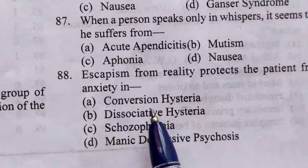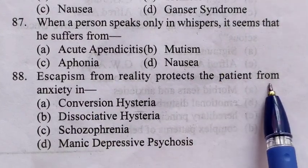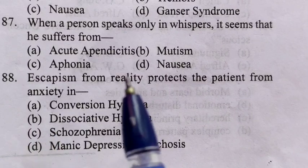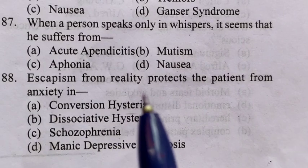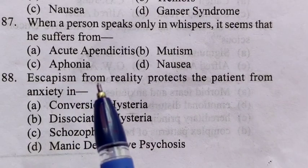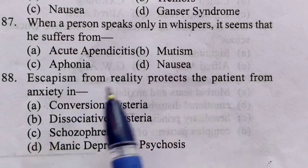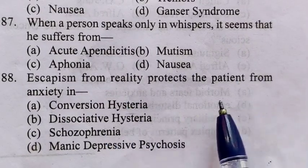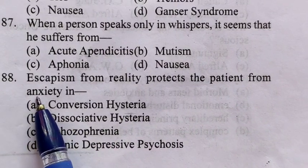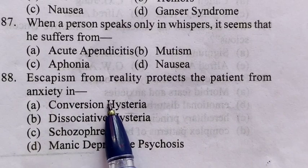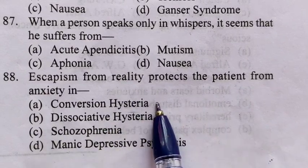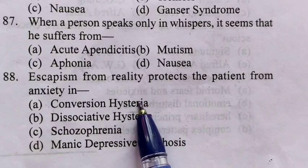88th question: Escapism from reality protects the patient from anxiety in — ki jo bhaagna, nikal jaana kisi paristhiti se, hai na. Chahe kuch cheez hai bholna bhi — ek escapism ka part hota hai. Koi buri yaad hai, aapka mind unko bhula deta hai, buri cheezon ko. Toh yeh bhi ek escapism ka roop hai. Sachai se door bhaagna ek patient ko kis cheez se protect karta hai — yeh sab brain ki qualities hoti hain. 88th question ka answer hai A, conversion hysteria — ki agar escape karne mein aapka mind madad karta hai reality se, toh aapko conversion hysteria wali problem se protection milta hai.